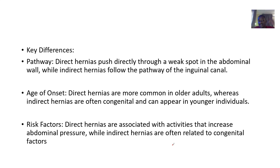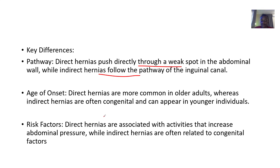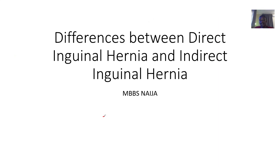To summarize the differences: for the pathway, direct inguinal hernia goes through a weak spot in the abdominal wall, while indirect goes through the inguinal canal. For age, direct is mostly in older adults, while indirect is congenital or seen in younger people. Those are the differences between the direct and indirect inguinal hernia.